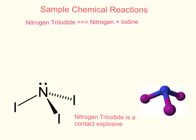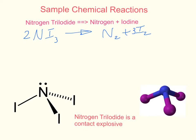Let's look at a sample chemical reaction that involves nitrogen. Nitrogen triiodide decomposes to become nitrogen and iodine. A balanced chemical equation representing this reaction is: NI₃ decomposes to become N₂ and I₂. Both nitrogen and iodine are diatomic — iodine is a halogen, by the way. To balance this chemical equation we need a coefficient of 2 in front of NI₃ and a coefficient of 3 in front of I₂.